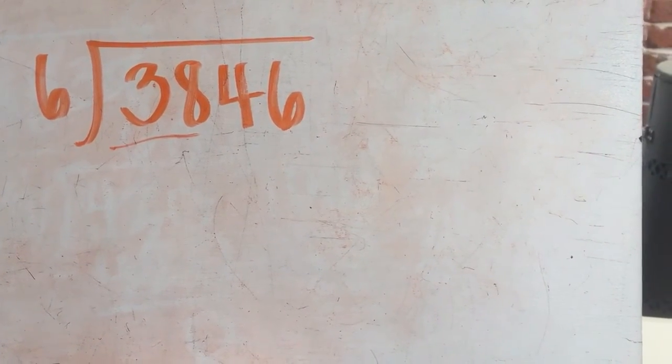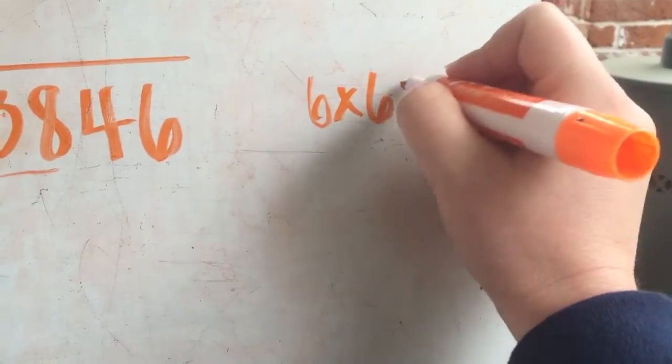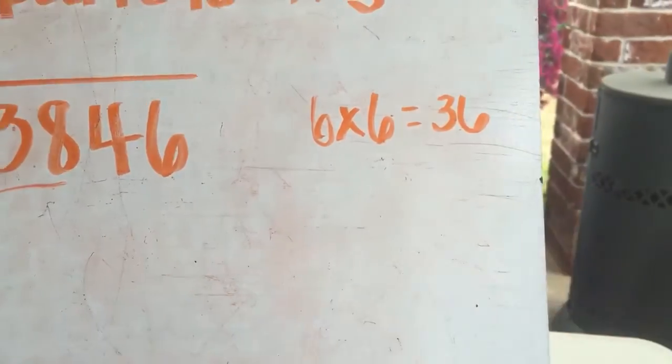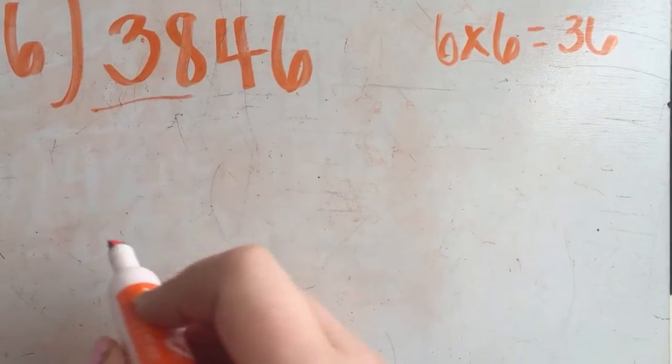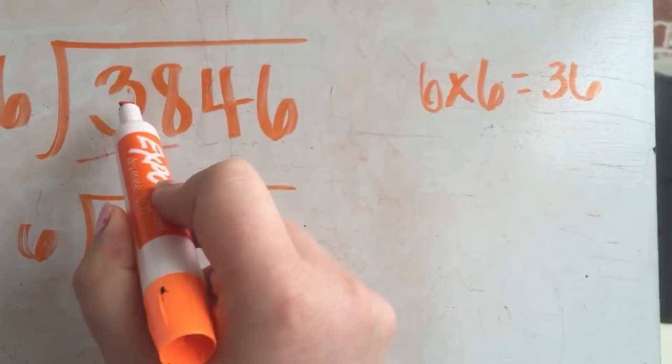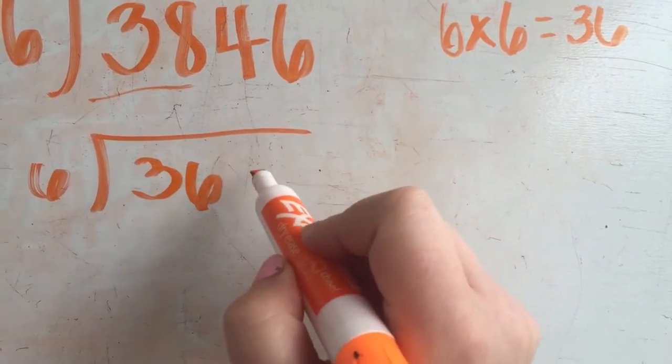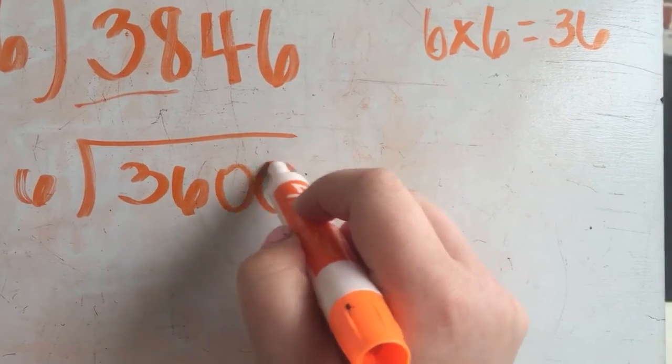Well I know that six times six is 36, and because six times six equals 36 I can use this real fast. In fact I'm going to rewrite the entire problem in about two seconds. I'm going to trade out 38 for 36, and just like in normal rounding everything else turns into zeros.